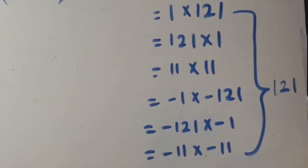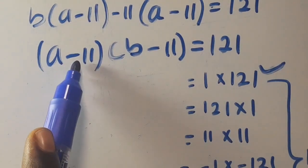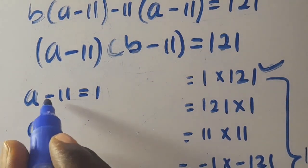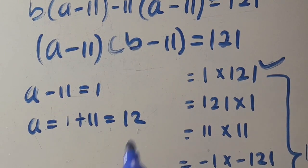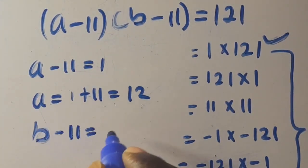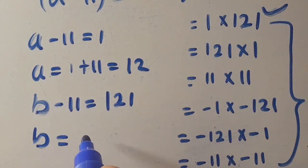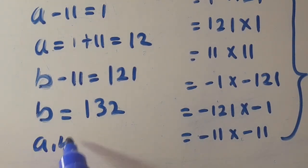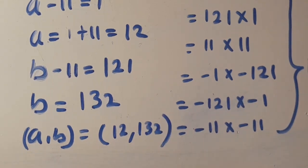For the first factor pair: a - 11 = 1 gives a = 12, and b - 11 = 121 gives b = 132. So the first solution is (a, b) = (12, 132).